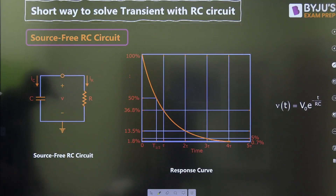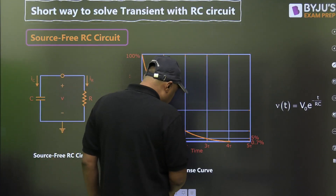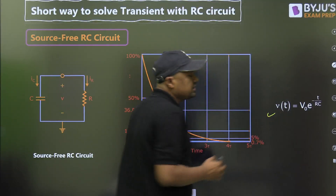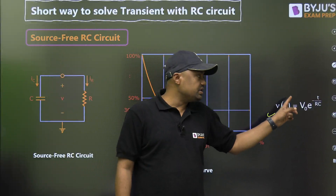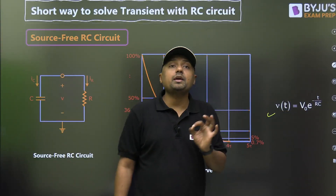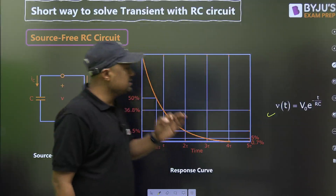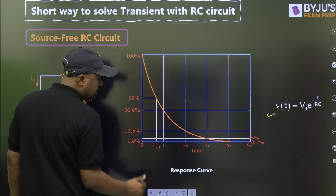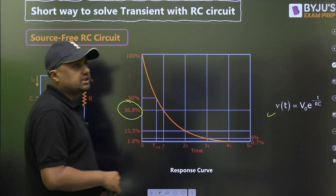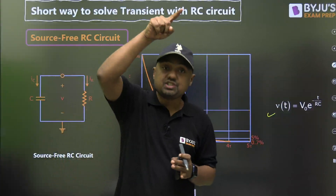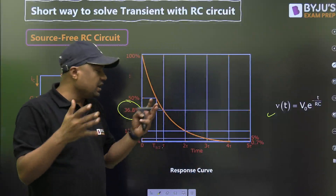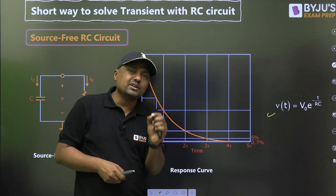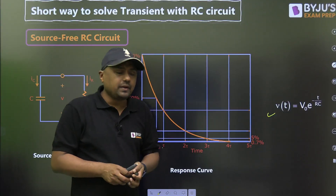For the source-free RC circuit, the formula is very simple: the voltage across the capacitor is V(t) = V₀ · e^(−t/RC), where RC is the time constant. This is an exponentially decreasing function. In one time constant, it discharges to 36.8% of the initial value, and in four time constants, it discharges to approximately 0.02% of the initial value.